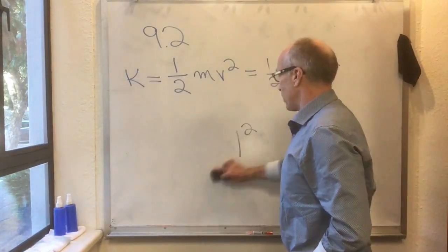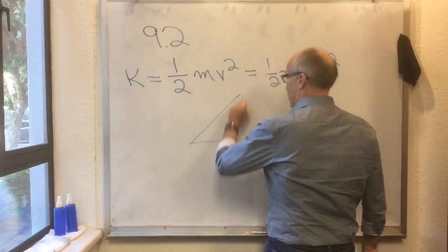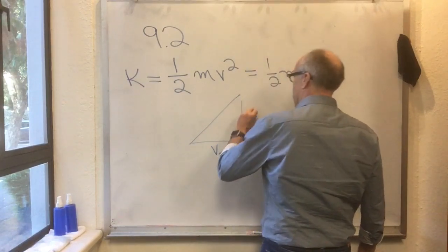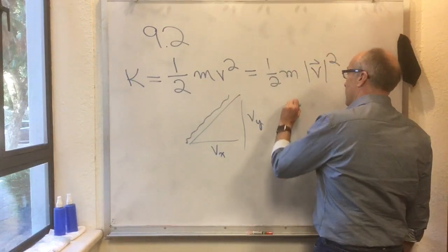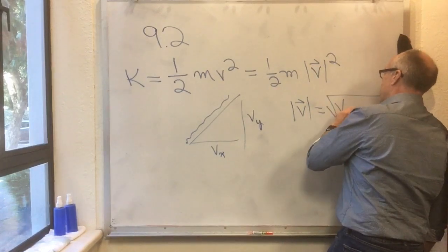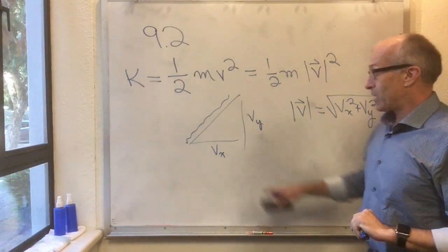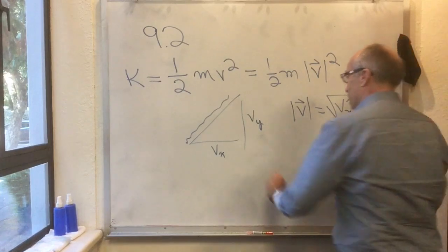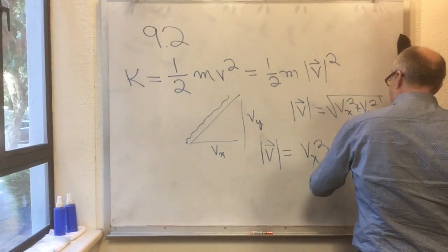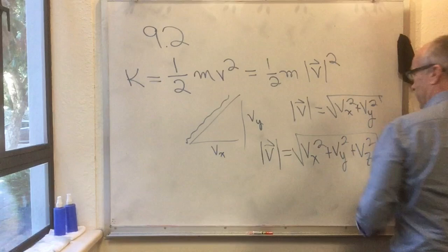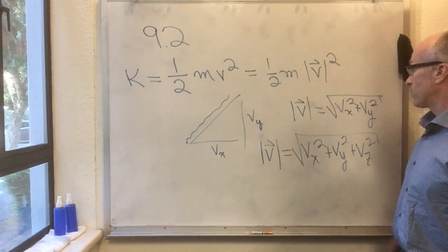Quite a long time ago in this class, I showed you that if you have a vector and you're trying to calculate its length, you use the Pythagorean theorem. In two dimensions, V equals the square root of Vx squared plus Vy squared. I generalized this to three dimensions: the length of vector V equals the square root of Vx squared plus Vy squared plus Vz squared.